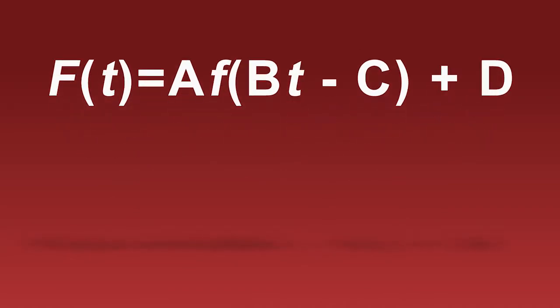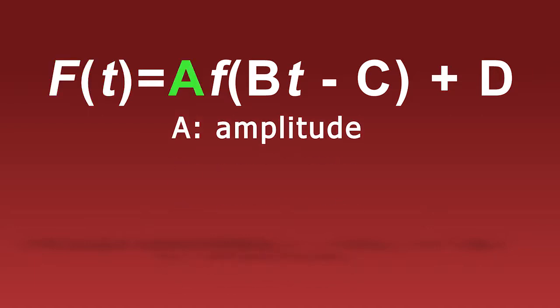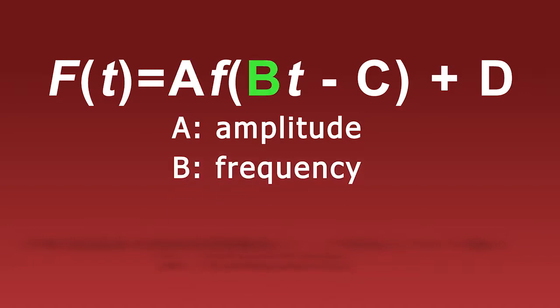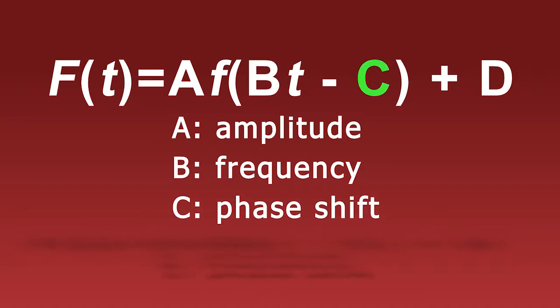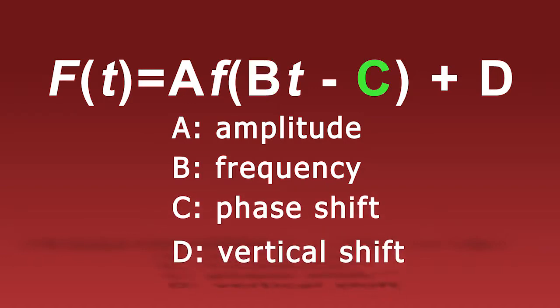To begin shifting trigonometric functions, write the trigonometric function in a specific manner. By writing the function in this format, we can easily identify the components of a phase shift or vertical shift. F of t represents the trigonometric function. A represents the amplitude of the function. B represents the frequency of the function. C represents the phase shift of the function. D represents the vertical shift of the function. For this specific concept, we will focus on the components C and D.